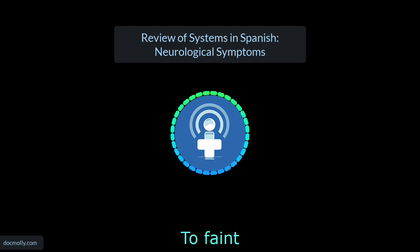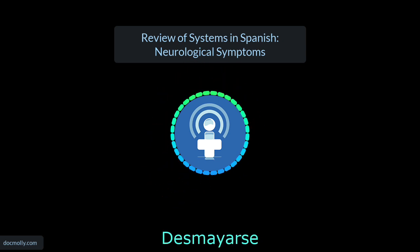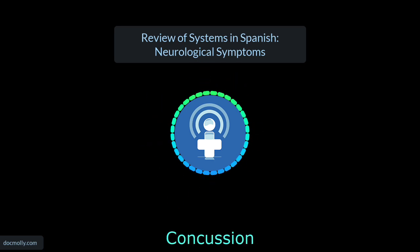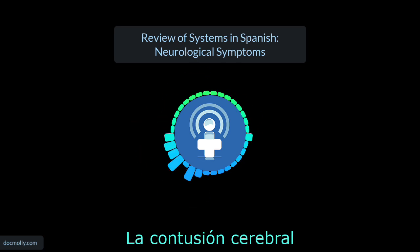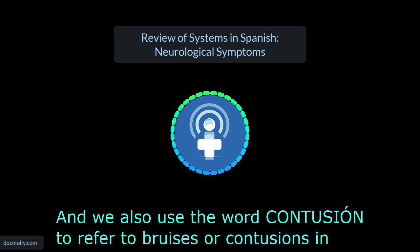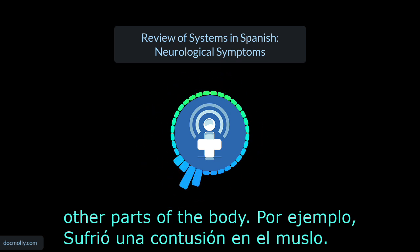To faint — Desmayarse. This is a pronominal verb — Desmayarse. I faint — Me desmayo. Concussion — La conmoción cerebral, o La contusión cerebral. We also use the word contusión to refer to bruises or contusions in other parts of the body — por ejemplo, sufrió una contusión en el muslo.